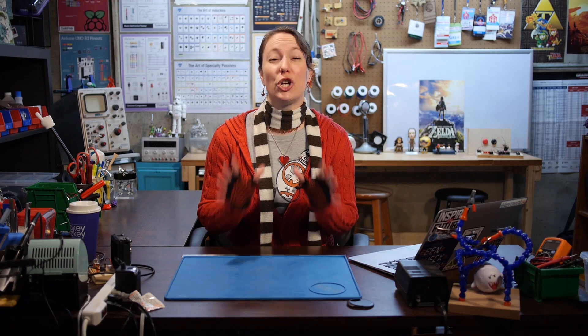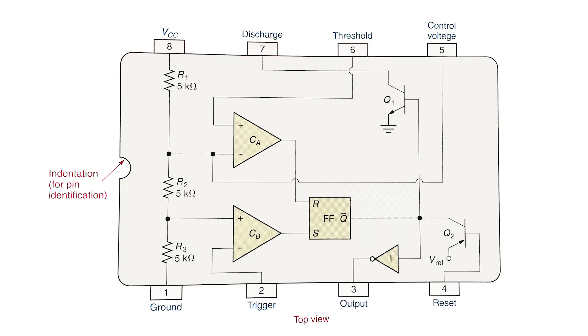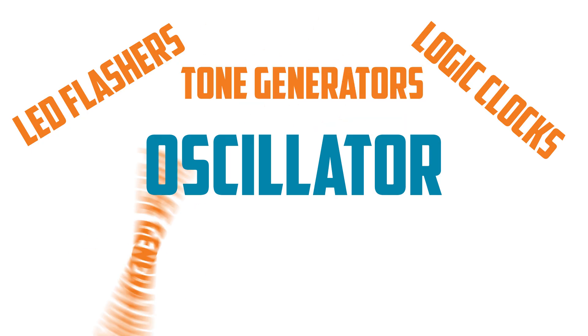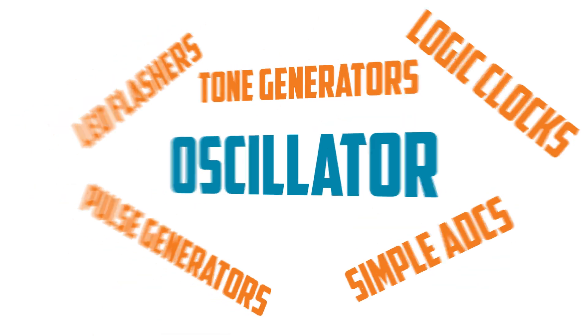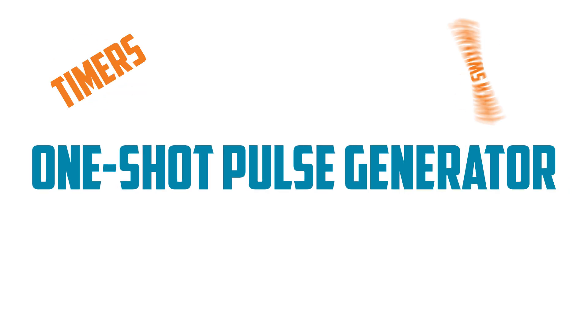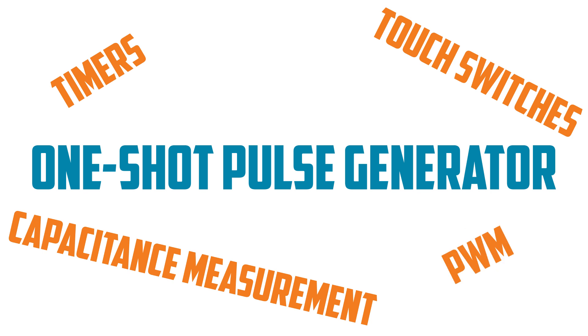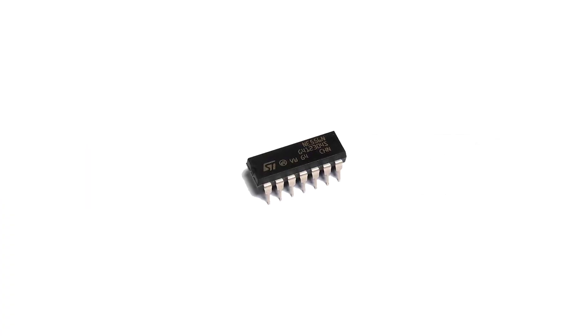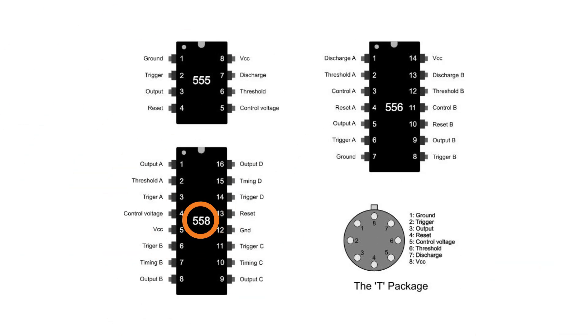The last IC I want to talk about is one that's incredibly useful, inexpensive, and quite robust, but falls in a fuzzy area when being defined as analog or digital — the 555 timer. This little 8-pin chip contains two comparators, a flip-flop, an inverter, two transistors, and a voltage divider. It can be used as an oscillator for LED flashers, logic clocks, tone generators, pulse generators, and simple ADCs. It can function as a one-shot pulse generator for timers, touch switches, capacitance measurement, and PWM. It can also function as a Schmitt trigger, functioning as a flip-flop. 555s can also be found in pairs in the 14-pin 556 IC chips, or four-to-a-chip in the 16-pin 558s.